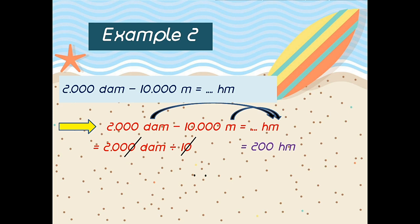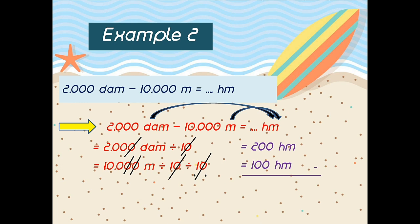And next, from meter to hektometer — up or down? Good, up. How many steps? Yeah, two. So the answer: 10,000 meter divide by 10 divide by 10 is 100 hektometer. And now: 200 hektometer minus 100 hektometer is 100 hektometer. Good. Example number three.